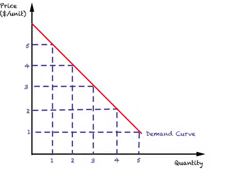These points show the maximum price a person is willing to pay for each unit. For example, for the first unit this person is willing to pay a maximum price of $5. For the second unit, a maximum price of $4. For the third unit, a maximum price of $3.